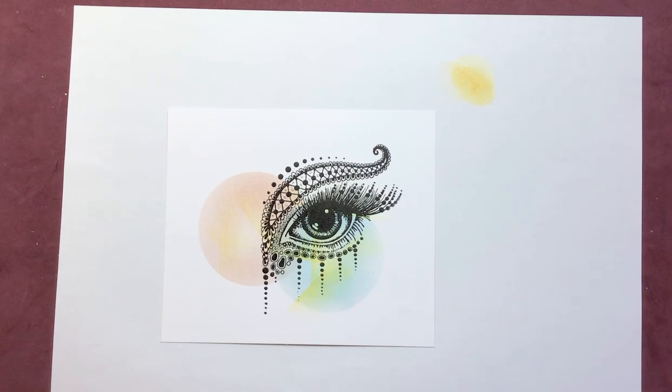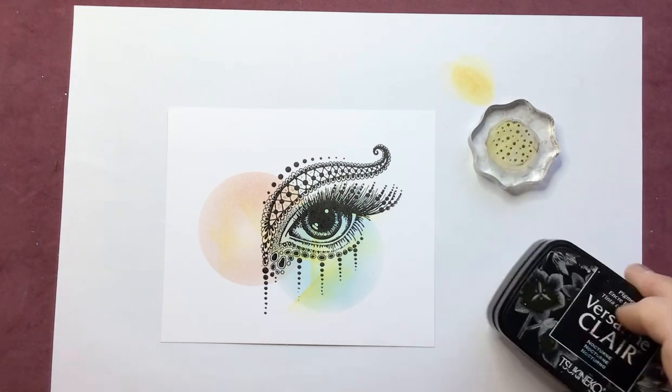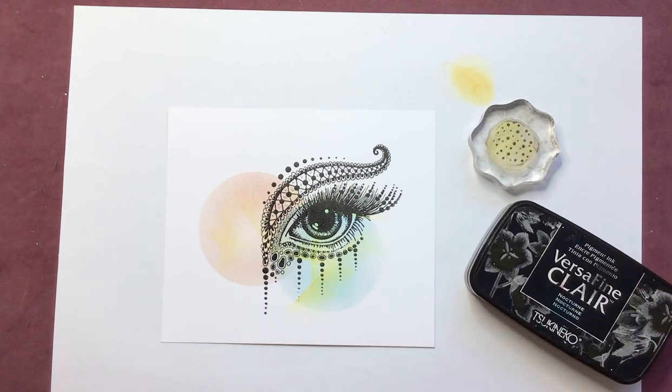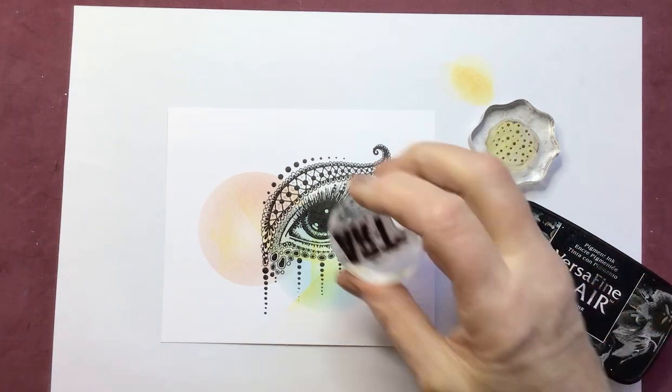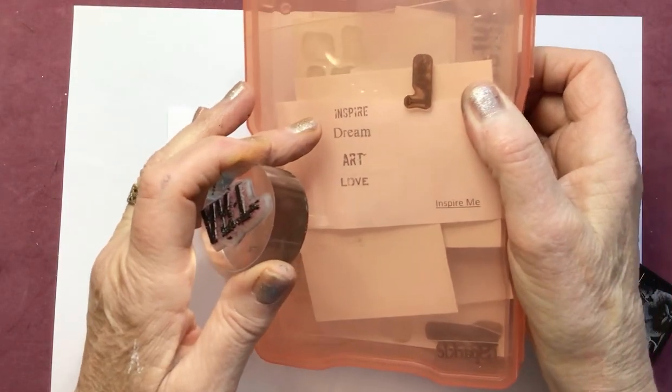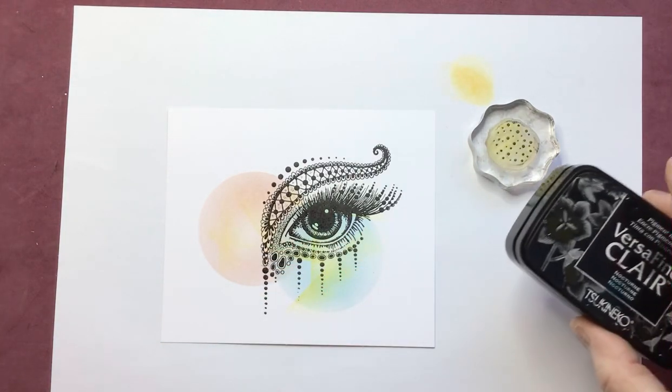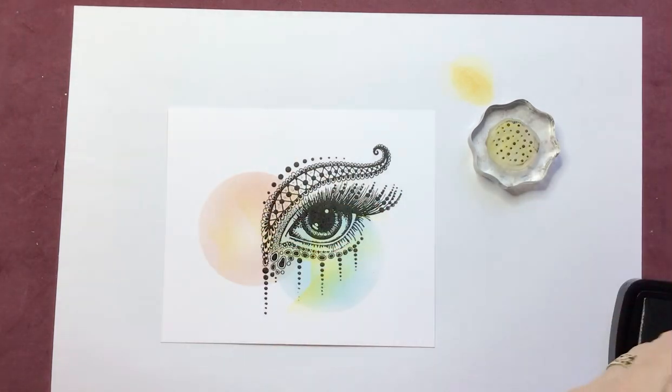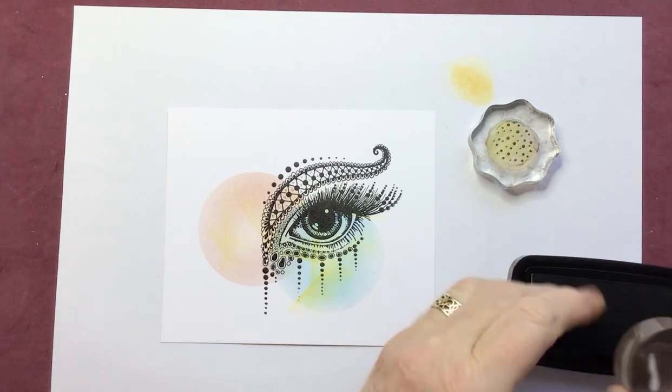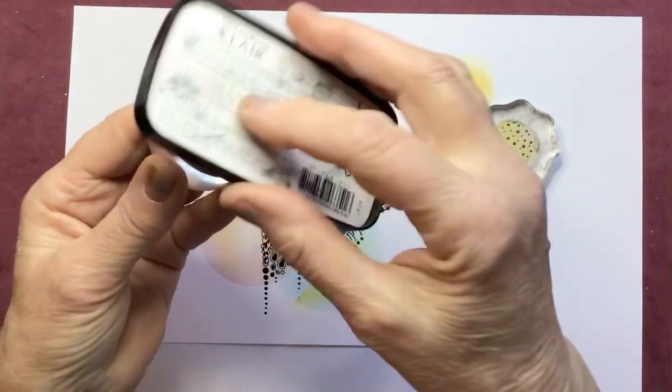Couple more bits to do and I'm using mini dots here, again Versafine Nocturne, and also the word art. This is from the inspire me set and you get inspire, dream, art and love. Use this a lot especially in my journals actually. I was doing a journal page yesterday, it was so relaxing, really enjoyed it.